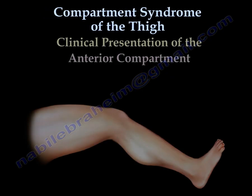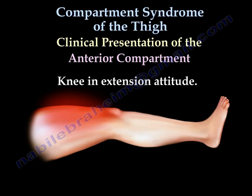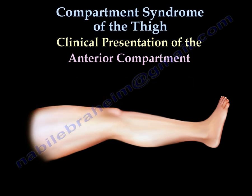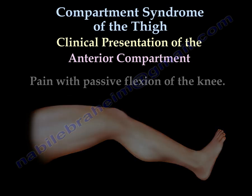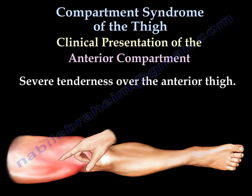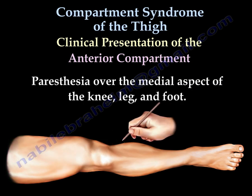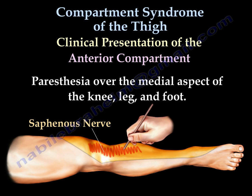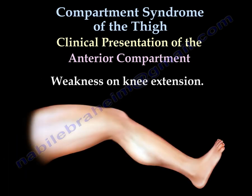Clinical Presentation of Anterior Compartment Syndrome: knee in extension attitude; pain with passive flexion of the knee because we are stretching the quadriceps muscle; severe tenderness over the anterior thigh; paresthesia over the medial aspect of the knee, leg, and foot — which is the course of the saphenous nerve; and weakness on knee extension.